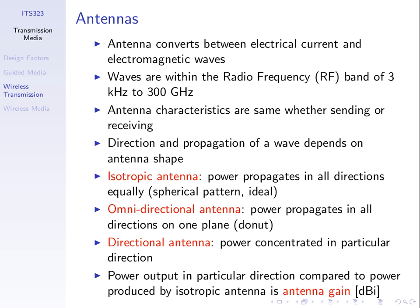In many cases we want to shape the signal to go in a particular direction — we use directional antennas. A special case is an omnidirectional antenna that transmits equally in the horizontal plane but weaker going up and down, creating a donut shape. Access points are typically omnidirectional antennas. With a directional antenna, instead of transmitting power equally in all directions, the power is concentrated in one direction and weaker in others.